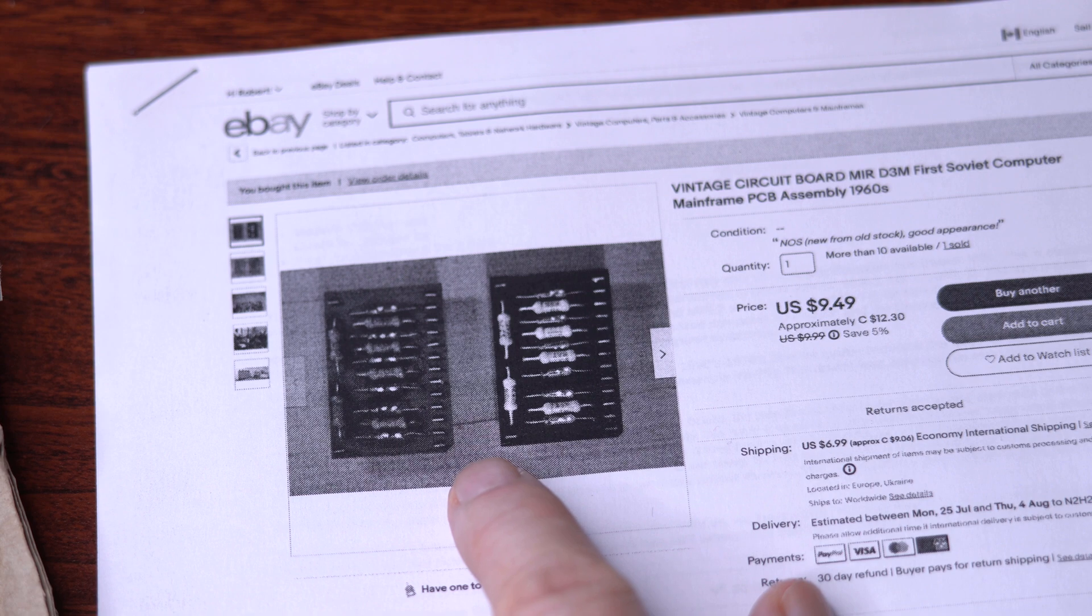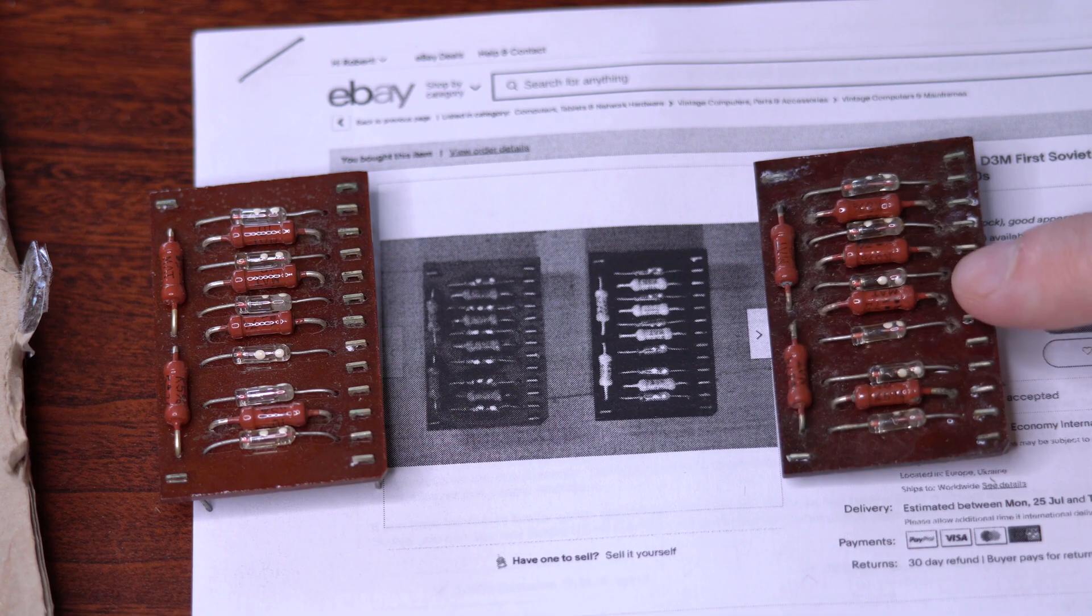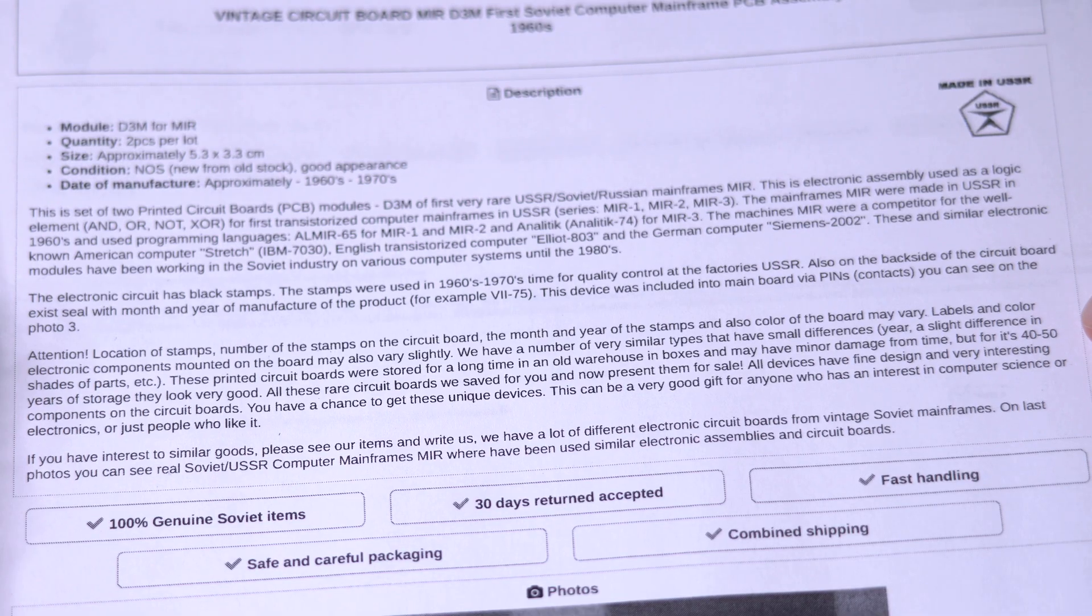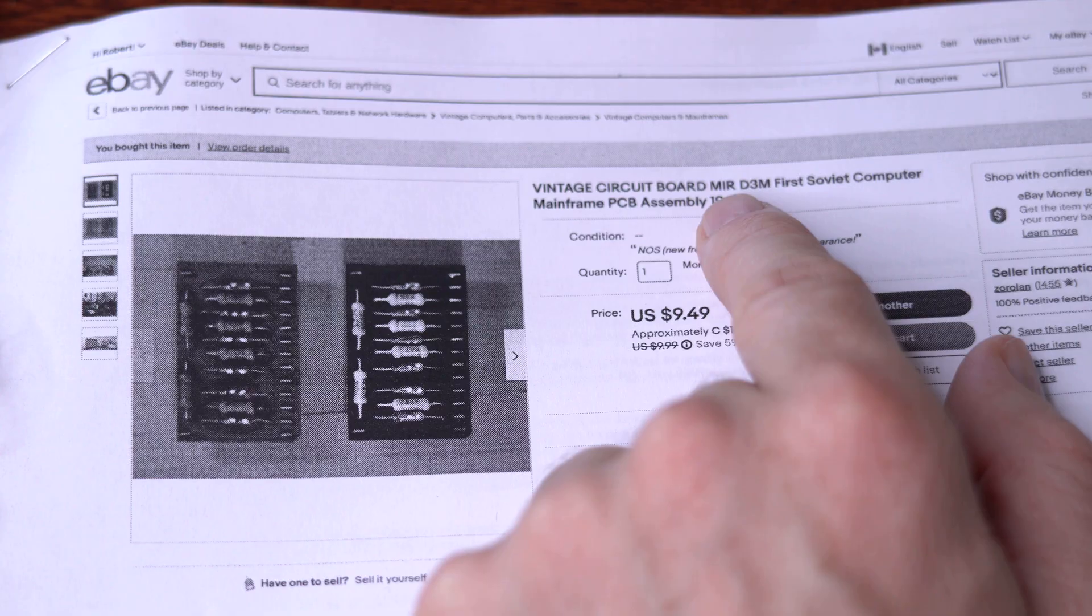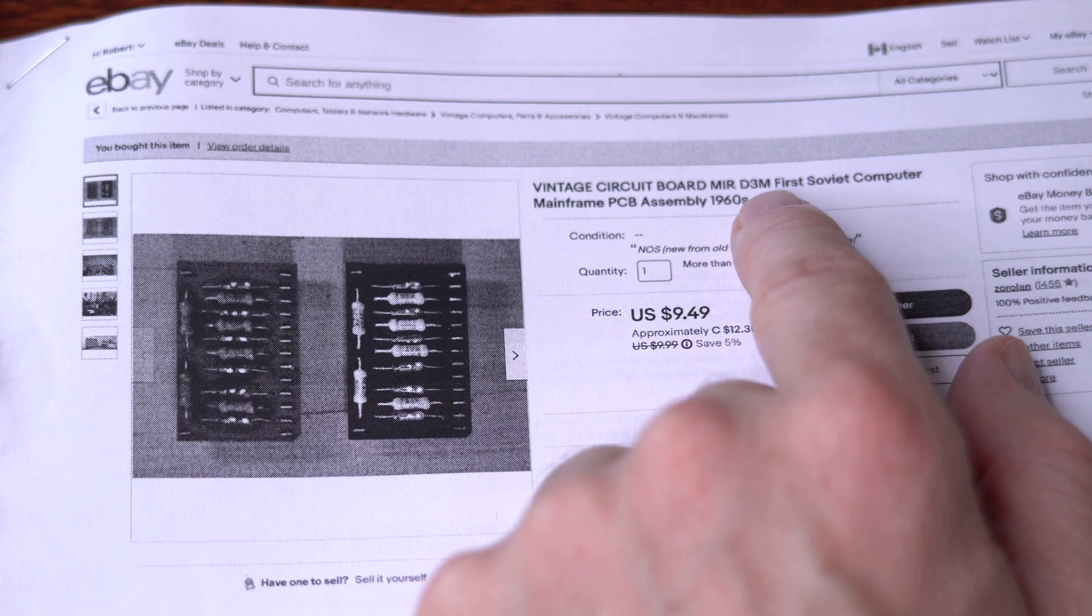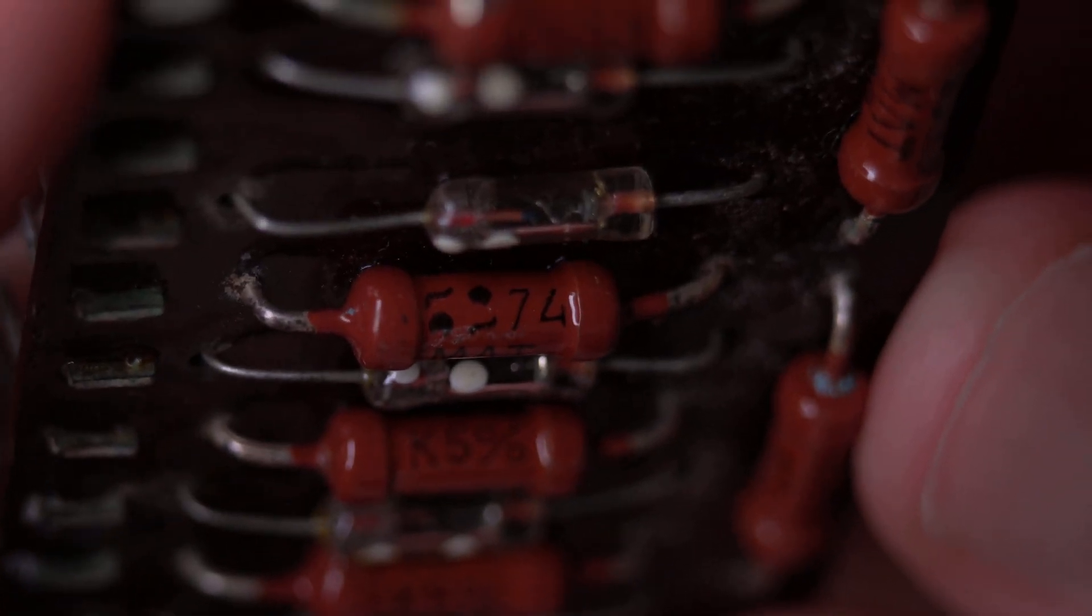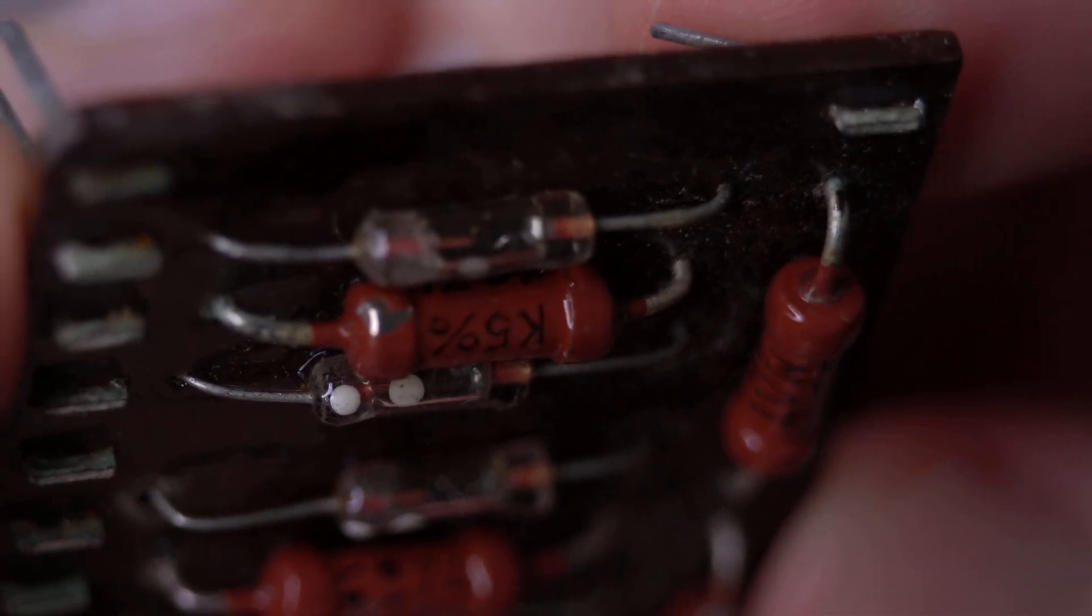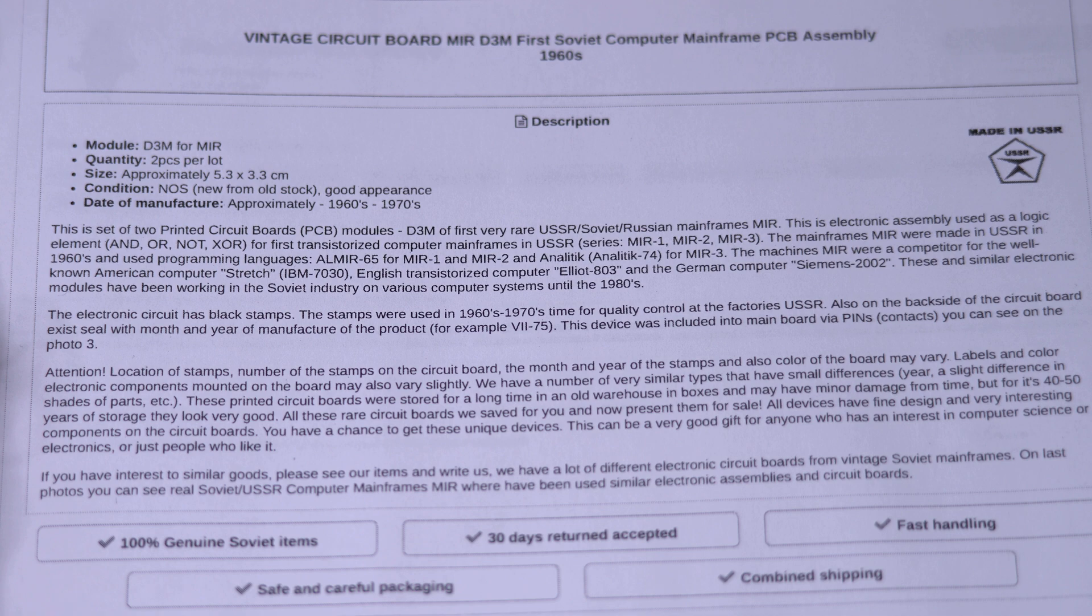Next, let's try to find this one. Here's the matching circuits for the second one. And the eBay description for this one looks to be the same as the last one. But the title claims that it's a Mir D3M First Soviet computer. And here's a close-up view of the second circuit. And it looks like the description for the second circuit is nearly identical to the first one.